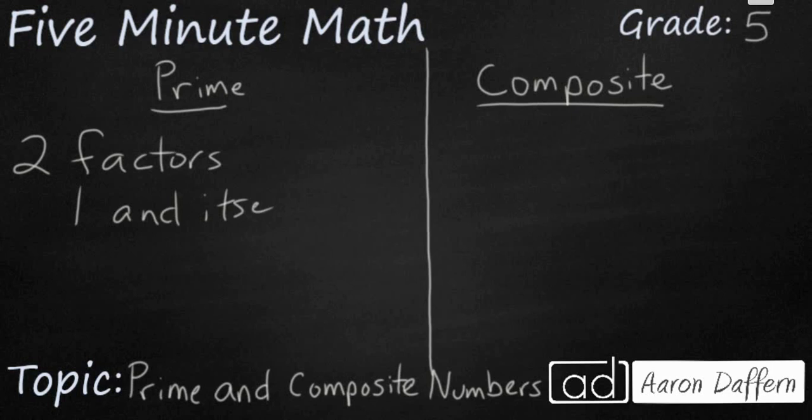So, for example, the number two is prime, because the only way to make two is two times one.